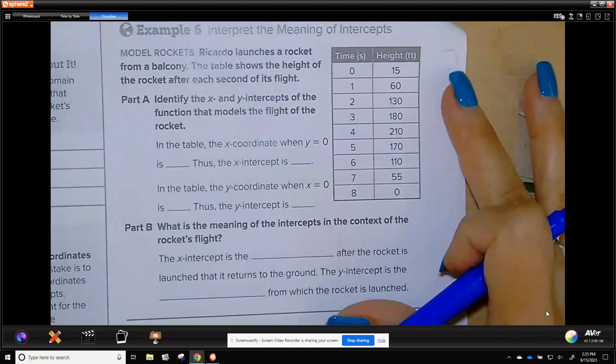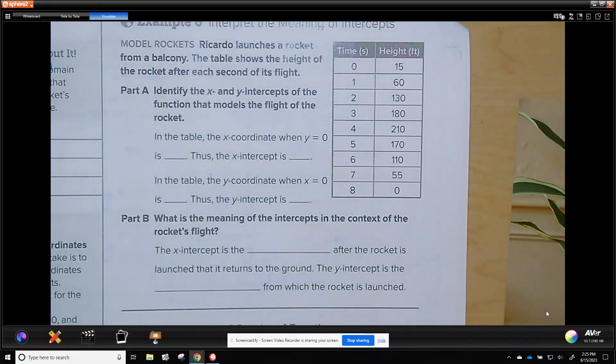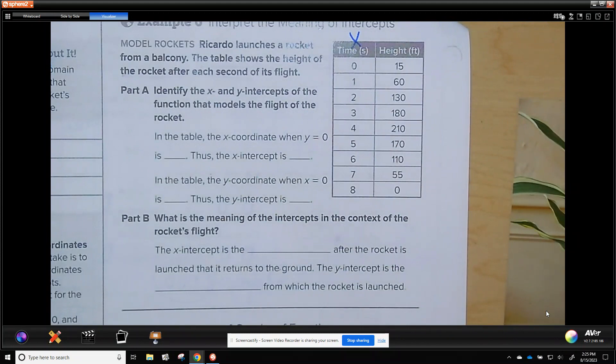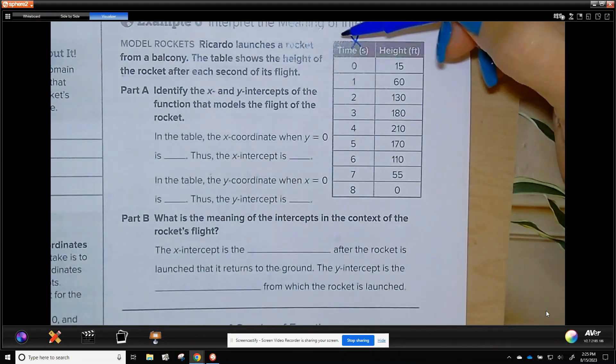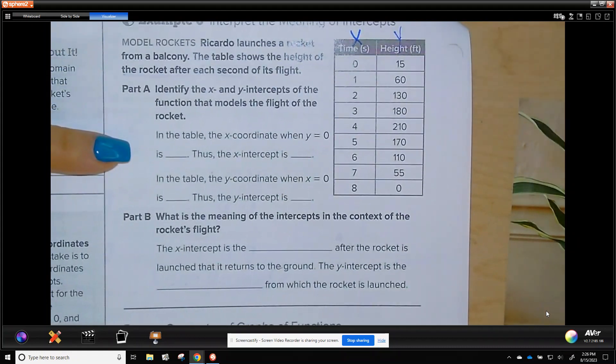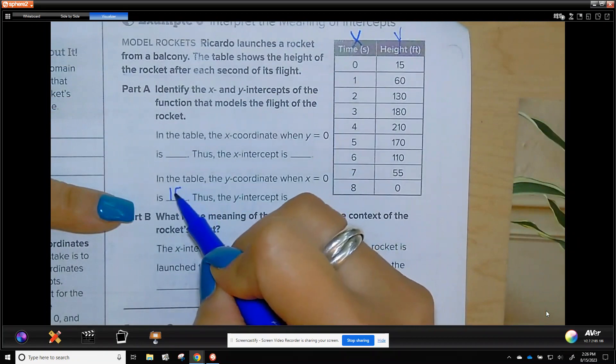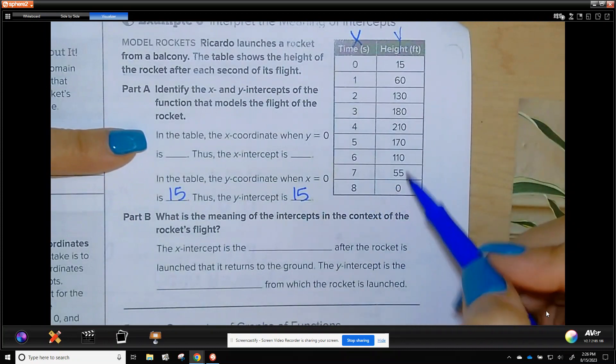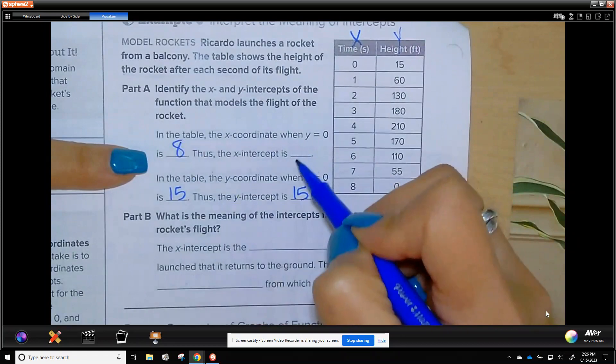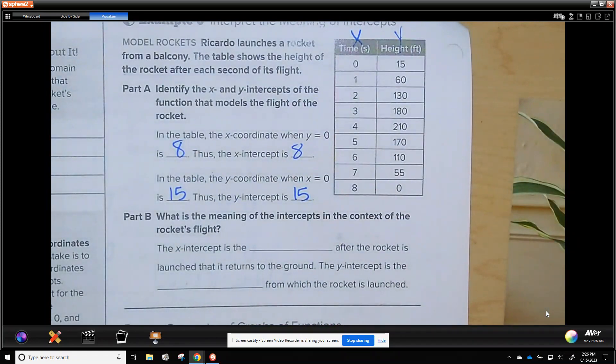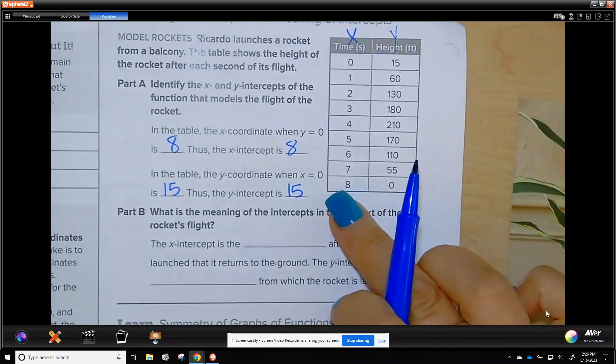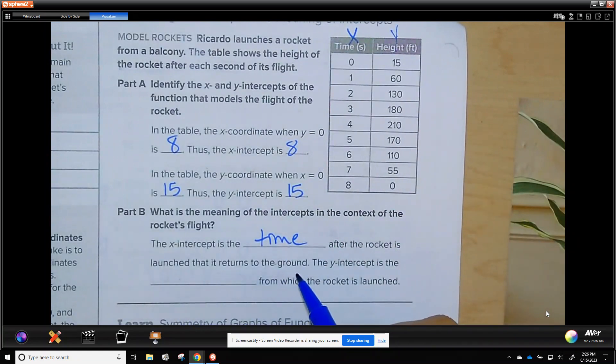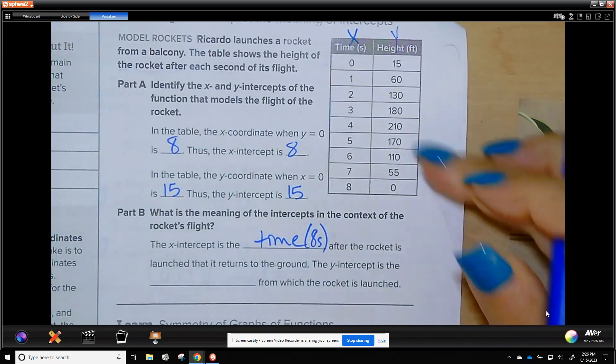Looking at this table, Ricardo launches a rocket from a balcony. The table shows the height of the rocket after each second of its flight. Here is my x. X is always time. X is independent. Now, my height is 15. So, this is my y-intercept. So, y-intercept when x is 0 is 15. So, my y-intercept is 15. My x-intercept is when y is 0. So, when y is 0, my x is 8. So, my x-intercept is 8 seconds. What does this mean? The x-intercept is the time the rocket is launched and returns to the ground.